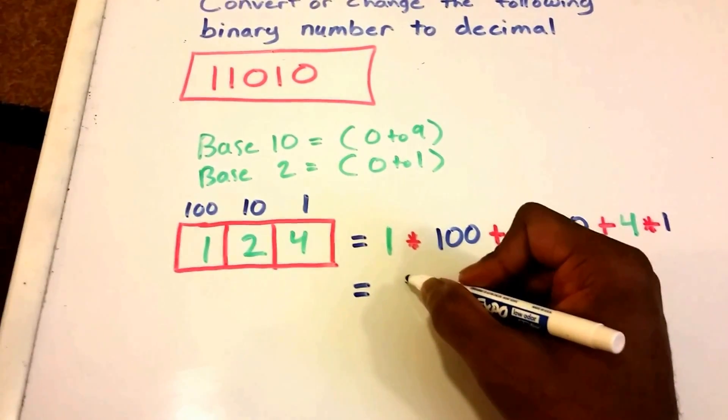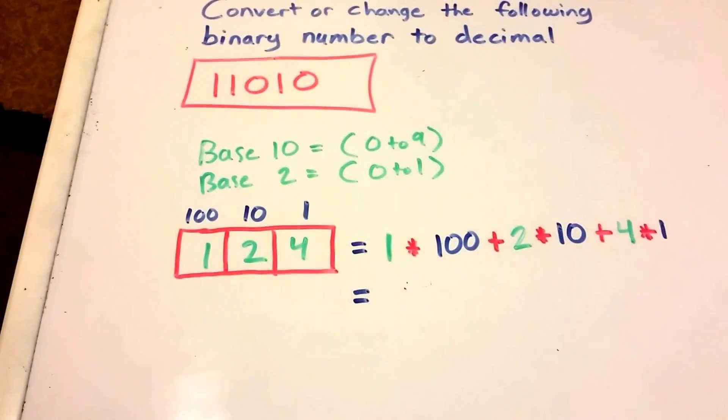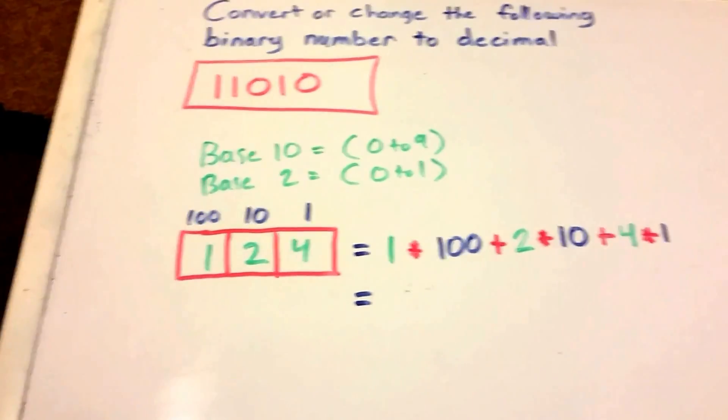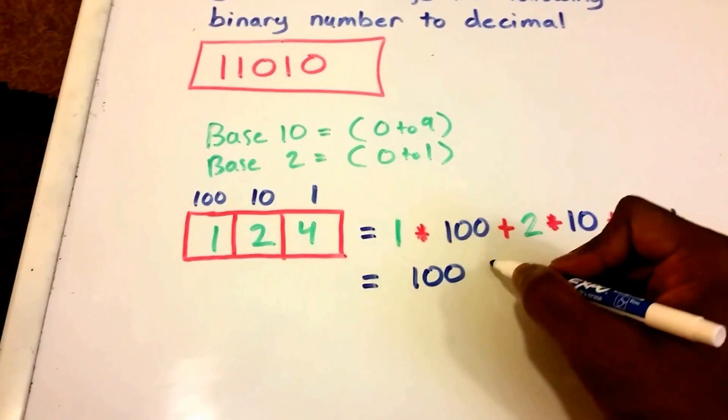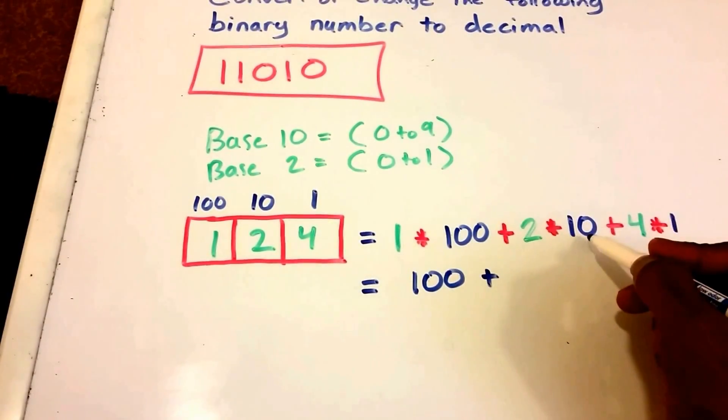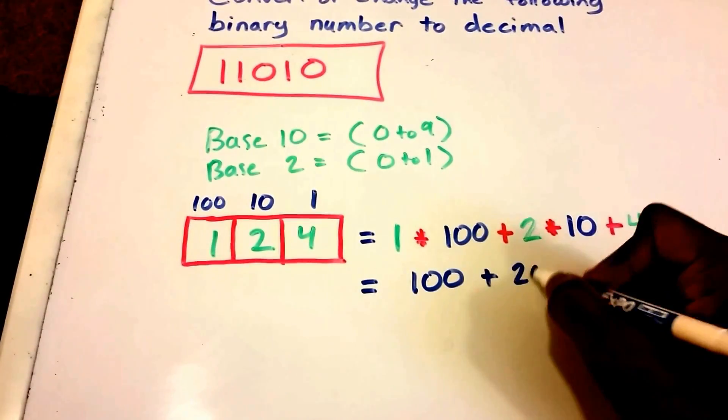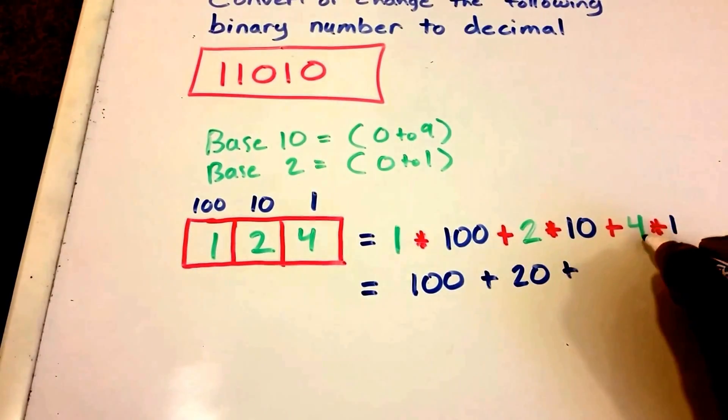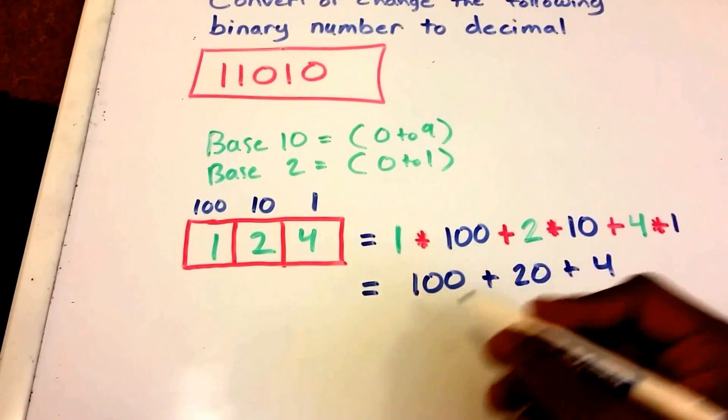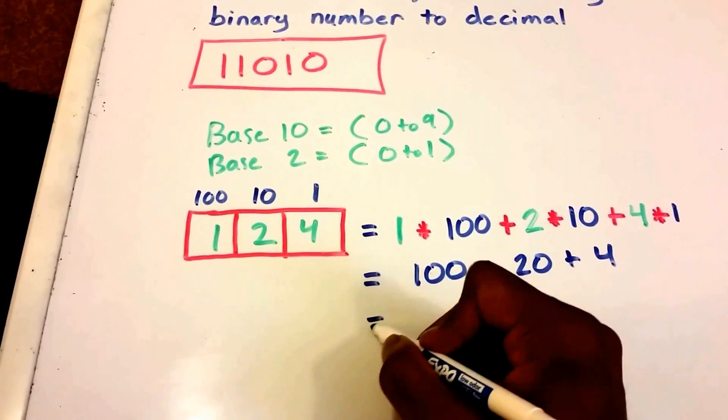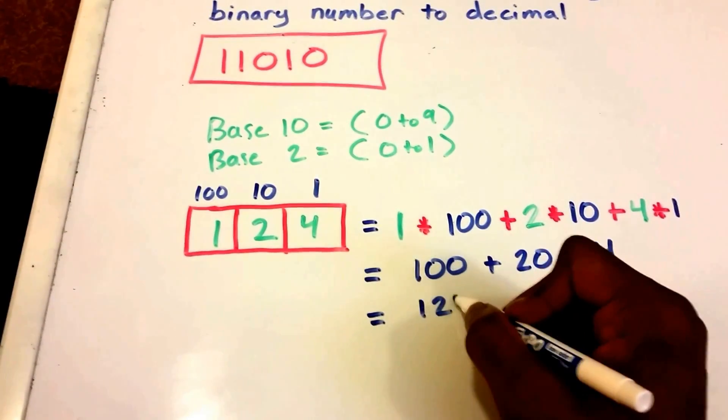And then plus 4 times 1, right there. And so then we can do a little bit of math here. We get 1 times 100 is 100. I'm gonna just use one marker this time. Plus 2 times 10 is 20, plus 4 times 1 is 4, and what we get is 124.